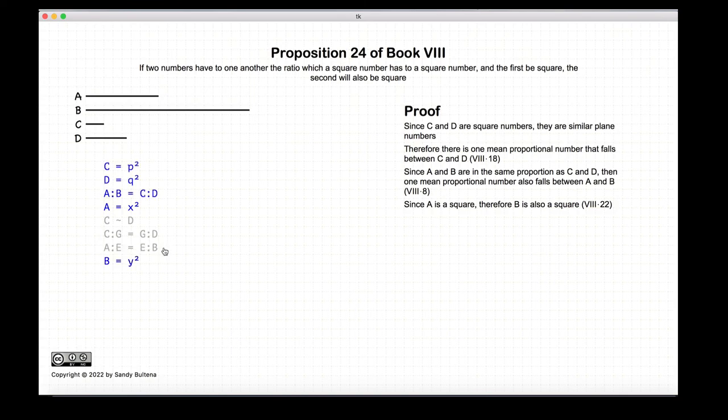And that's it for this proof. So, to recap, the ratio of C to D is equal to the ratio of A to B. C, D, and A are all squares, thus B is also a square.